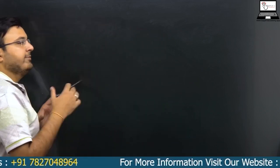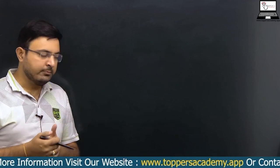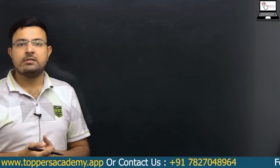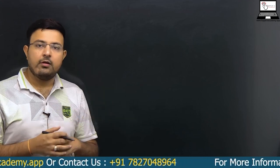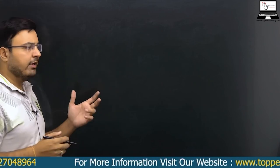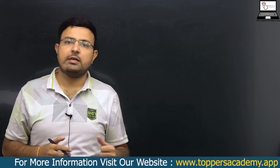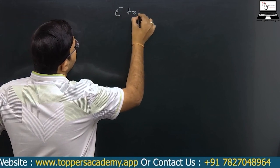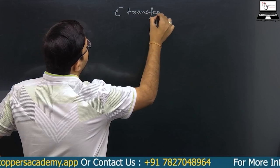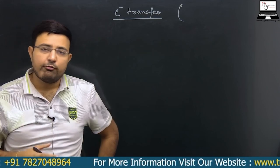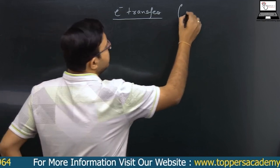Now that we have seen Lewis symbols, the main point is how bonds are formed. Lewis suggested two methods of bond formation: the electron transfer method, and the electron sharing method. We will take them one by one, starting with the electron transfer method.